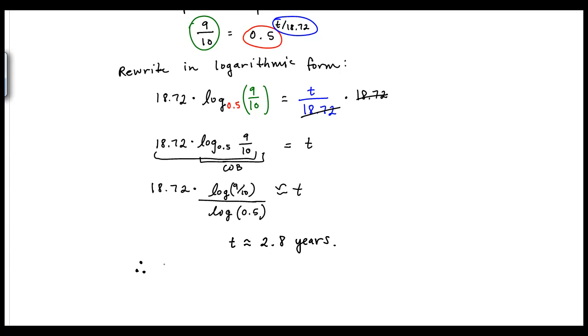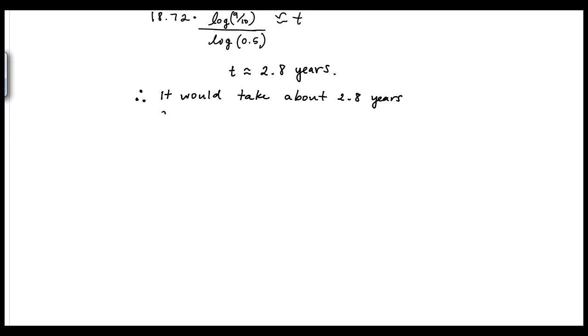So therefore, it would take about, because we approximated, we have to say about, 2.8 years for thorium 227 to reach 9 grams.